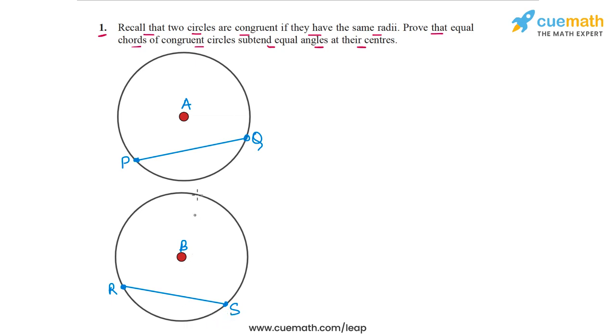Now we have to prove that because PQ and RS are equal, they will subtend equal angles at the centers. So let's join the endpoints to the center.